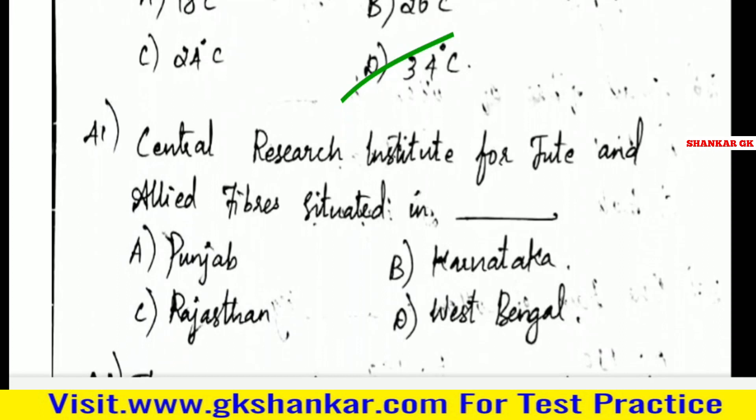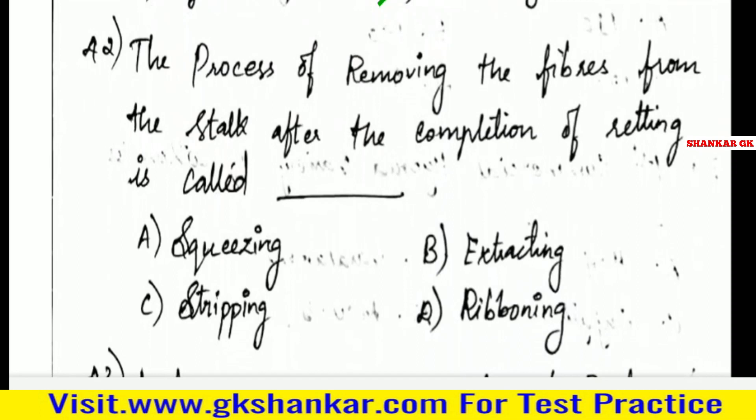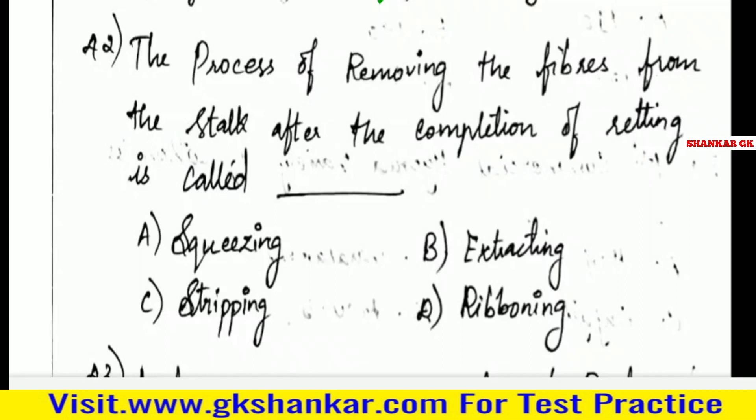Forty-first question: Central Research Institute for Jute and Allied Fiber is situated in — A. Punjab, B. Karnataka, C. Rajasthan, D. West Bengal. Answer: D. West Bengal.